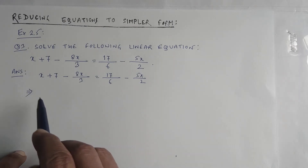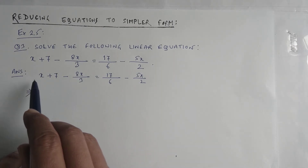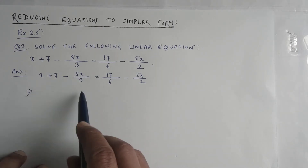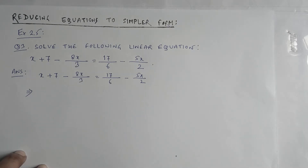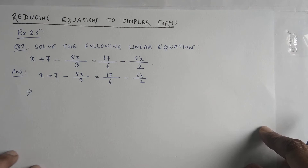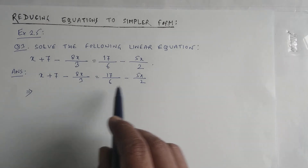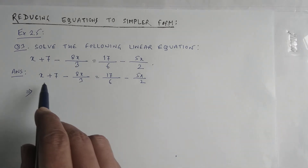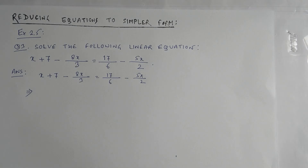Notice that this equation has the variable x on both sides — x is on the left side and also on the right-hand side. Moreover, it has different denominators: the denominators are 3, 6, and 2. To handle this easily, we can directly find the LCM of the denominators.